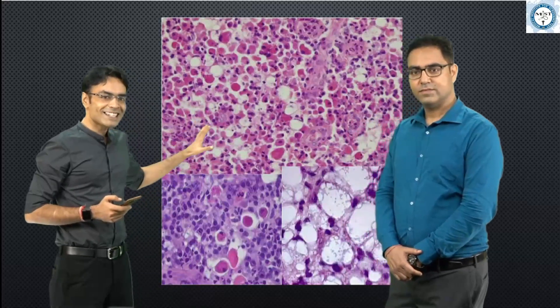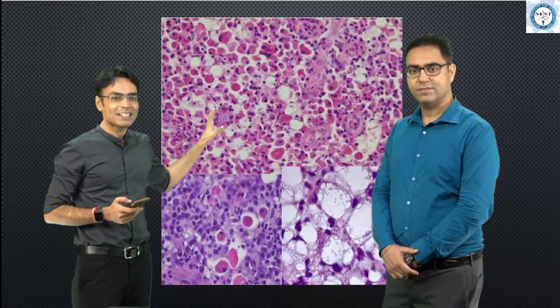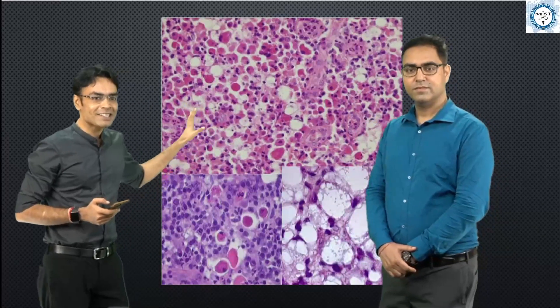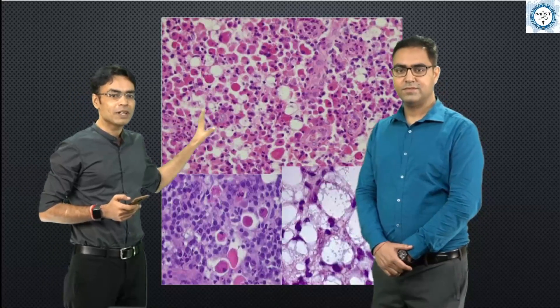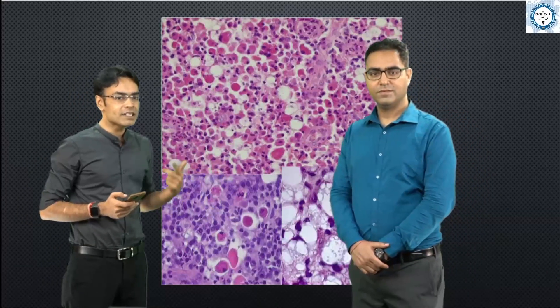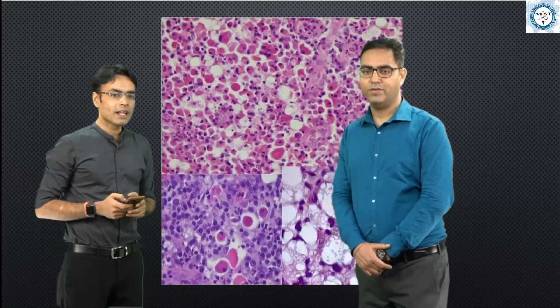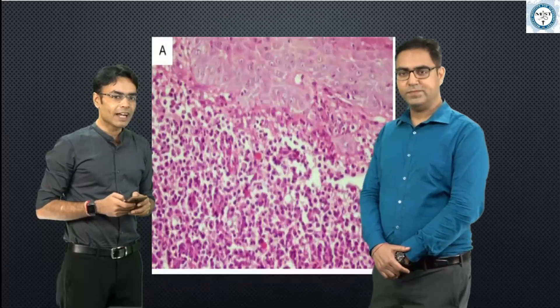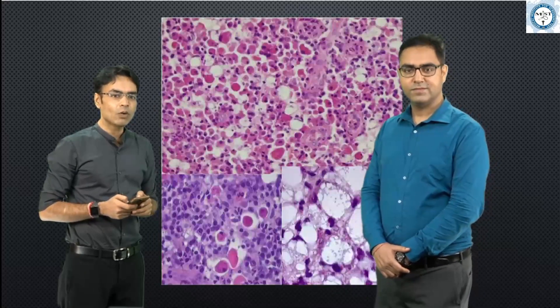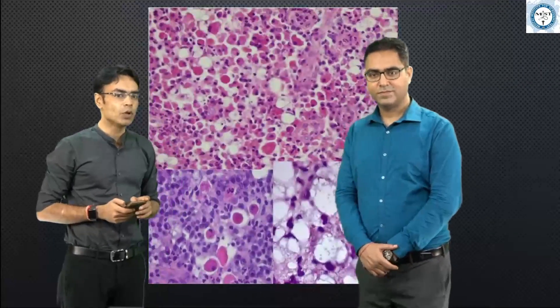Then comes the major stage — the granulomatous stage, the infectious stage proper — in which we are seeing the Mikulicz cells and the Russell bodies. Here, these are your Russell bodies — this pinkish deposition inside — and here are your Mikulicz cells again, the foamy mononuclear cells.